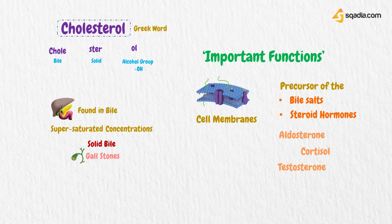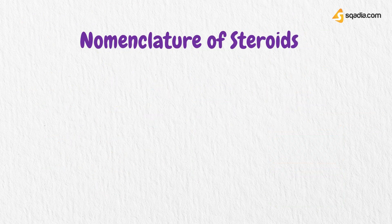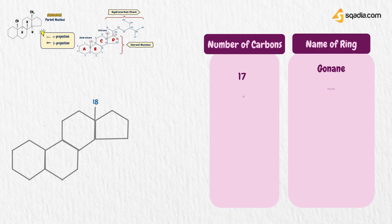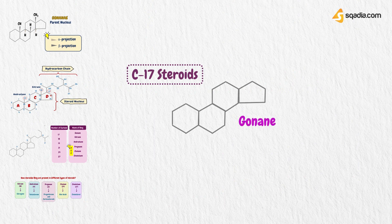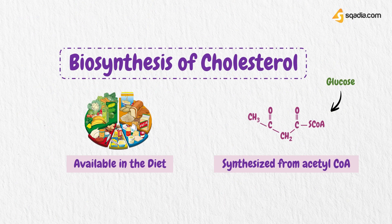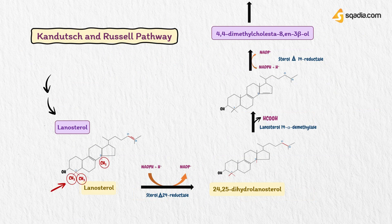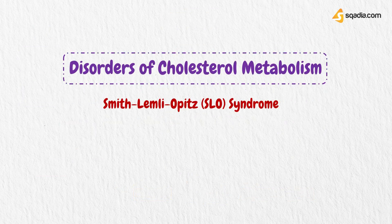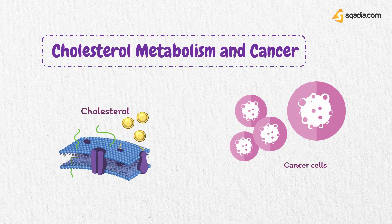In this biochemistry video, we will learn about cholesterol, its important functions, the nomenclature of steroids with minute details like the number of carbons, names of rings, and how the steroidal ring is present in different types of steroids. We will also learn about the biosynthesis of cholesterol, metabolism of lanosterol to cholesterol, the Kandutsch-Russell pathway and Bloch pathway, and the disorders of cholesterol metabolism.